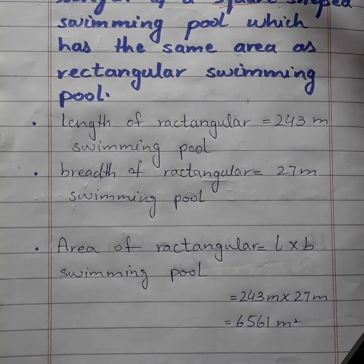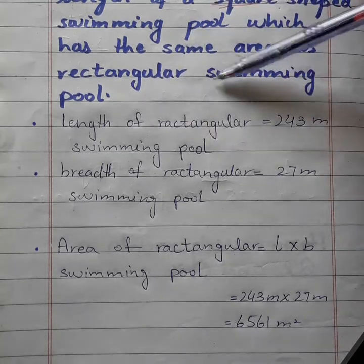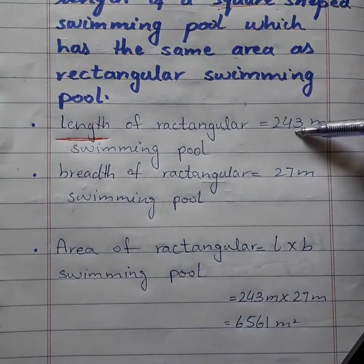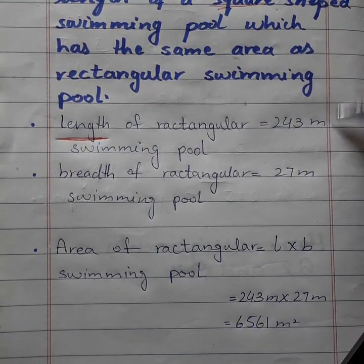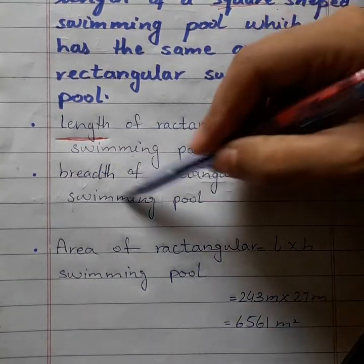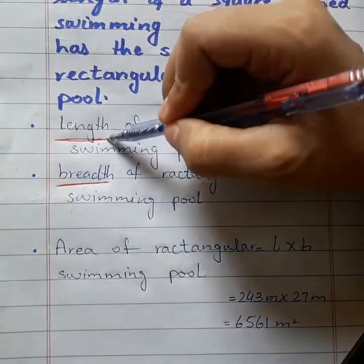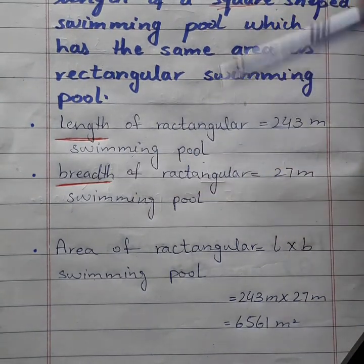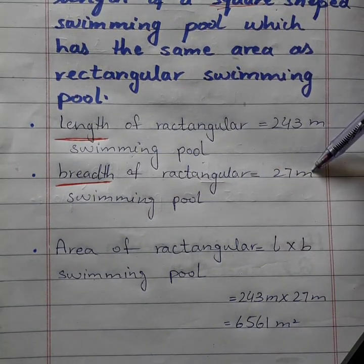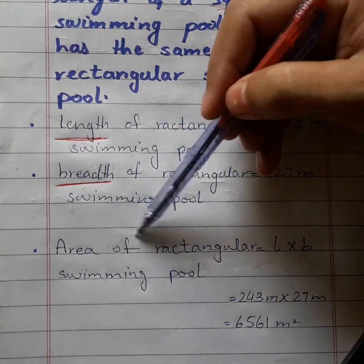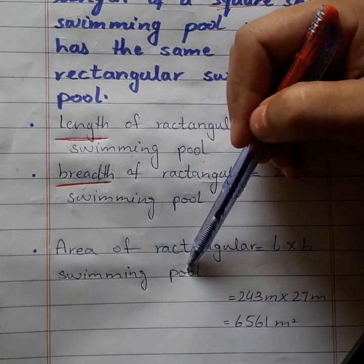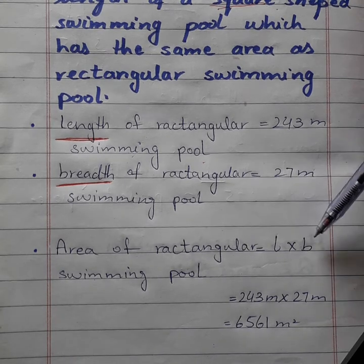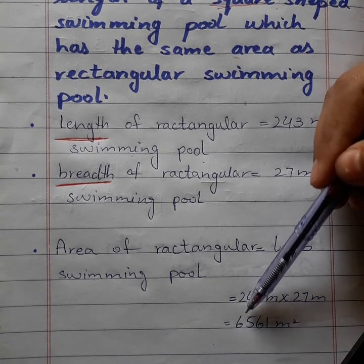Sabse pehle jo given cheezein hain hum woh likhenge. Length of rectangular swimming pool kitni hai: 243 meter. Uske baad breadth of rectangular swimming pool — length ko kehte hain lambai ko, breadth ko kehte hain chudai ko — breadth of rectangular swimming pool is 27 meter. Ab area of rectangular swimming pool kya hota hai: length multiply breadth.